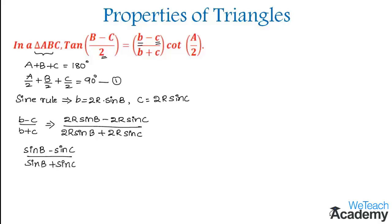This is in the form of the formula sine C plus sine D, so let us use that formula. By using it, we get 2 cos B plus C by 2 times sine B minus C by 2 divided by 2 sin B plus C by 2 times cos B minus C divided by 2.